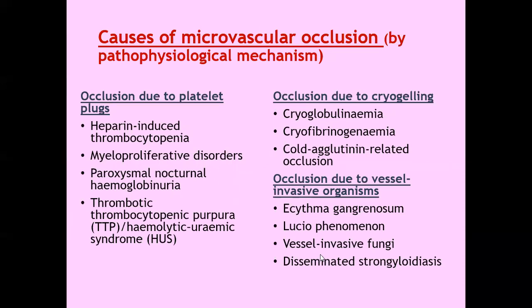This is a classification of the diseases that cause microvascular occlusion by pathophysiological mechanisms. If this occlusion occurs due to platelet plug, then the causes may be heparin-induced thrombocytopenia, thrombocytopenia, or myeloproliferative disorders, paroxysmal nocturnal hemoglobinuria, or thrombotic thrombocytopenic purpura, or hemolytic uremic syndrome. In all four diseases, the occlusion occurs because of platelet plugs.